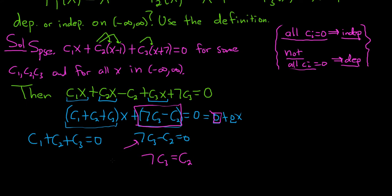Now what we can do is maybe work with this one here. So we have 7c₃ = c₂. So I think now we can just pick some numbers. So like if you pick c₃ = 1, what's going to happen there? That'll mean that 7 times 1 is equal to c₂. So c₂ = 7.